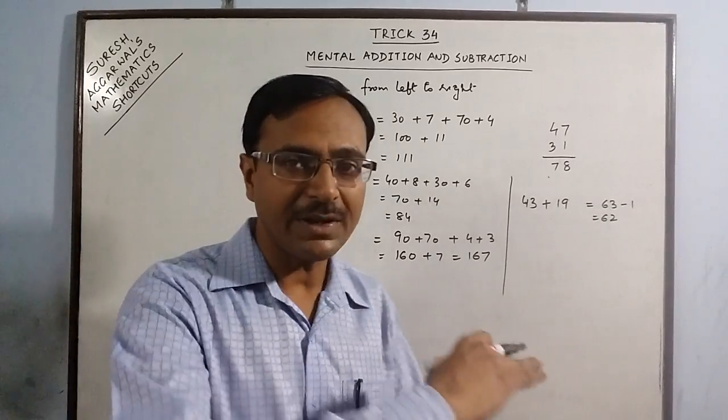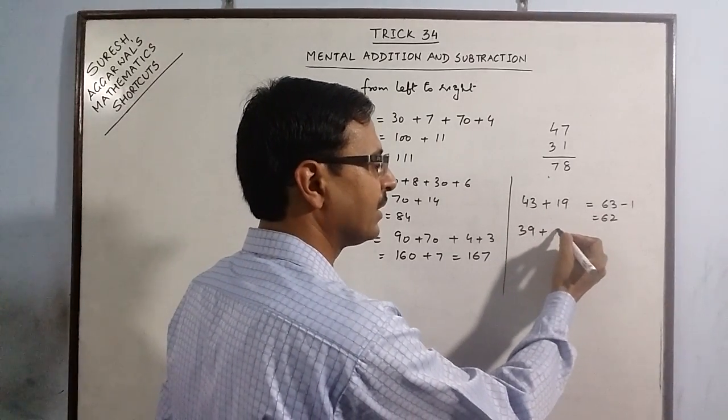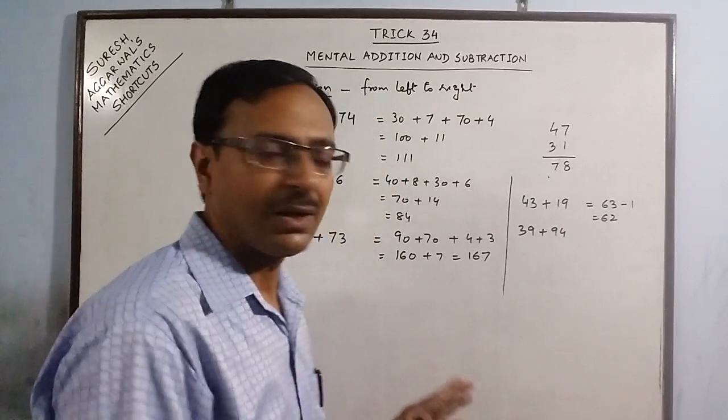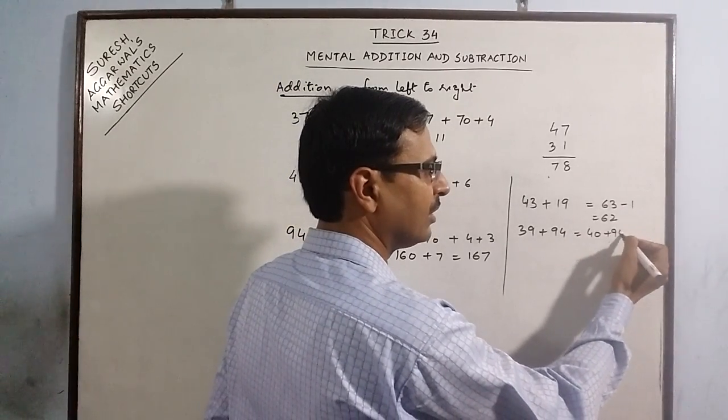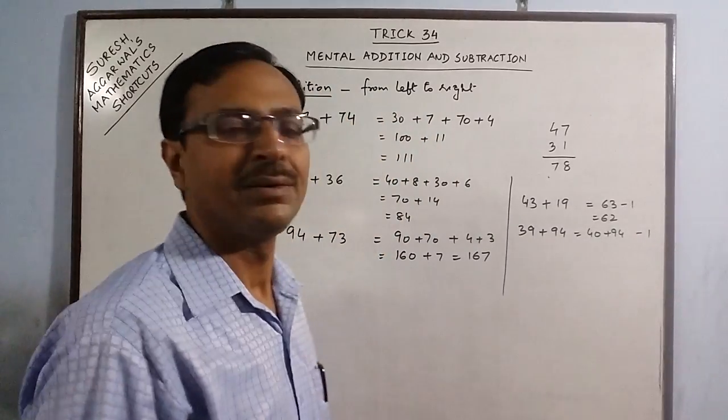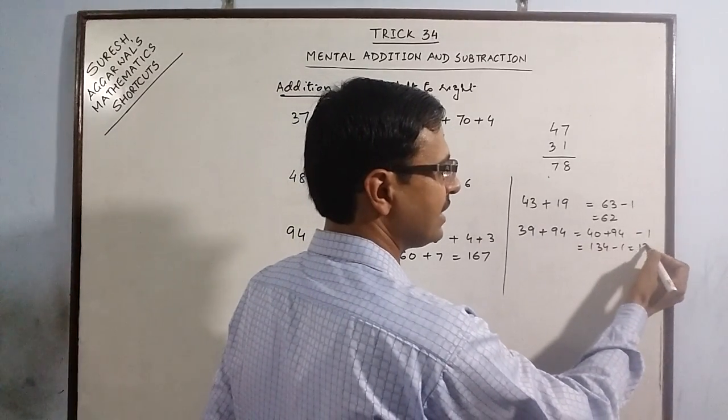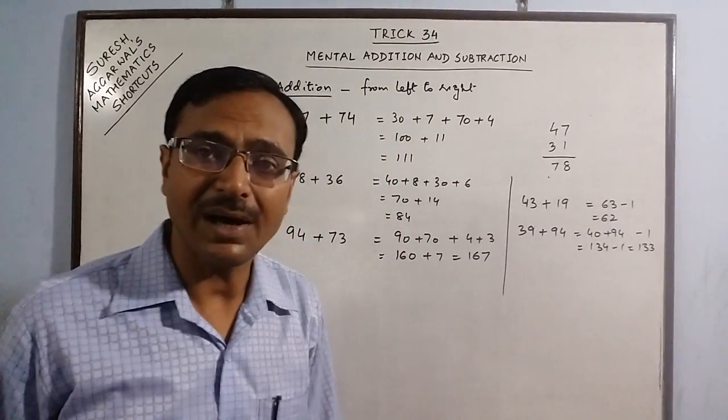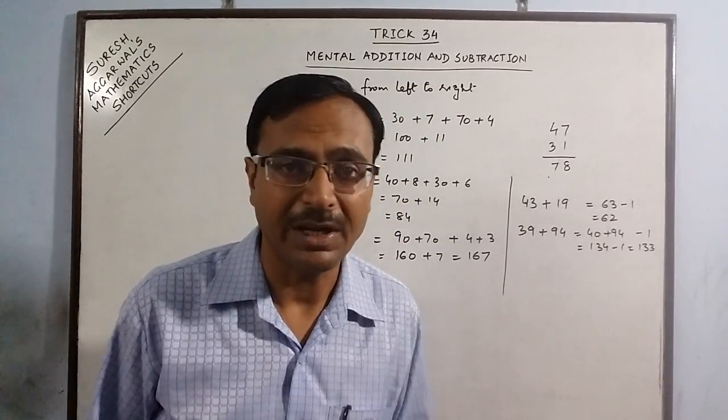It can be the other way round also. Say we have 39 plus 94. Now 39 is very near to 40, then subtract 1. So 134 minus 1 = 133. This is how the mental process of addition goes on in our mind.